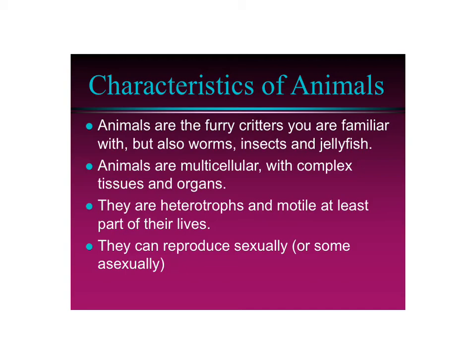They can swim, run, fly — they can move from place to place. All animals have the ability to reproduce sexually, with male and female. Some of them can also reproduce asexually, which means they can make offspring without a member of the opposite sex.